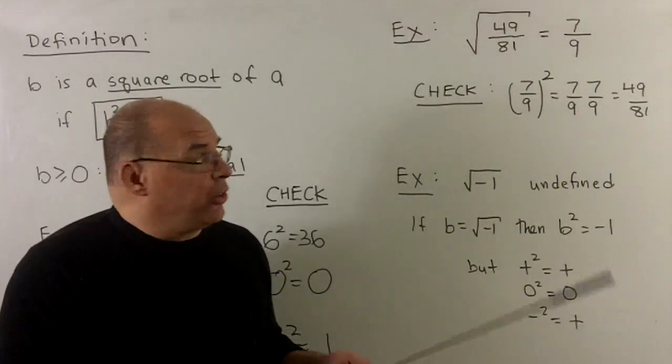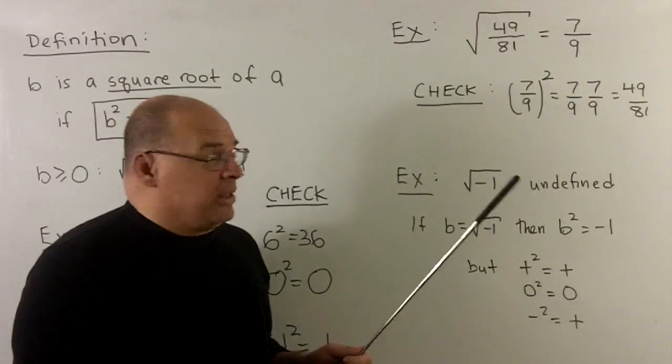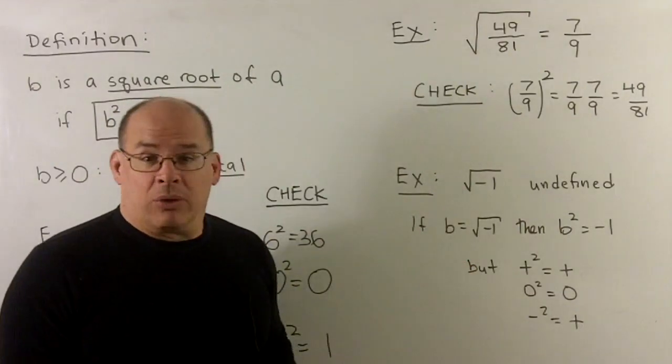If you're not sure, you just check your answer. So 7 over 9 squared, that's going to give me the 49 over 81. That's supposed to match what's under the radical.